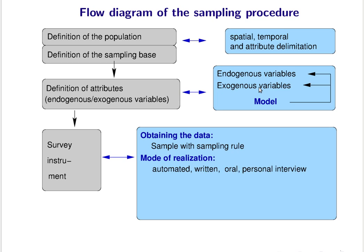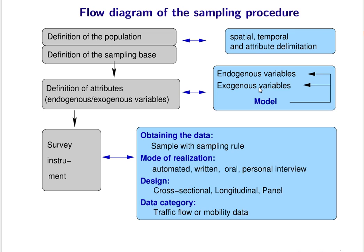Regarding survey design, cross-sectional means asking all the sample at one time, giving a snapshot. Longitudinal is basically making time series measurements. Panel means asking a certain panel of persons repeatedly over time. Once you have finished your survey instrument, you should do a pre-test, because several things can go wrong in an actual survey — particularly that people do not understand your questions, or the questionnaire is too long and they drop out.